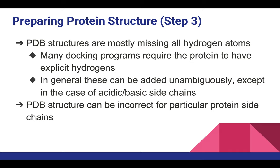Step three: even though it may look similar to step two, it's important to note that PDB structures are mostly missing all hydrogen atoms because of how they are processed. Many docking programs require the protein to have explicit hydrogens, so in general, hydrogens can be added unambiguously. However, there is an exception for acidic or basic side chains — if a side chain is charged, you need to add hydrogen atoms to balance it.